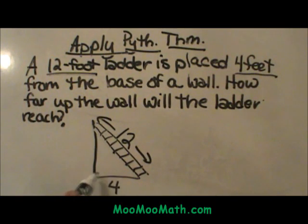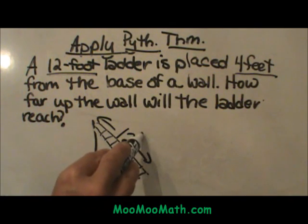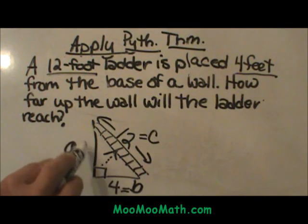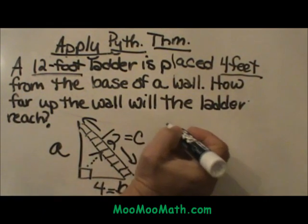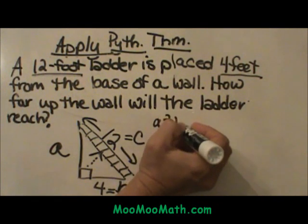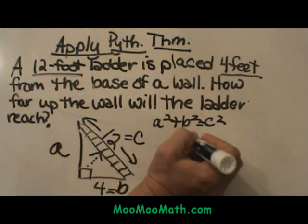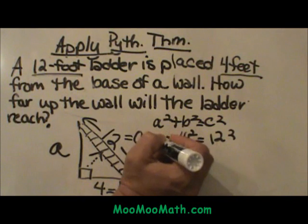Notice I have drawn a right angle. Let's label that because it identifies where our C is. Opposite our right angle is our hypotenuse, or C. That means the 4 is B and we are missing side A. Now I have identified my A, B, and C. Let's plug it into the Pythagorean Theorem: A squared plus B squared equals C squared. I am going to plug in 4 for B and 12 for C, and solve for A.